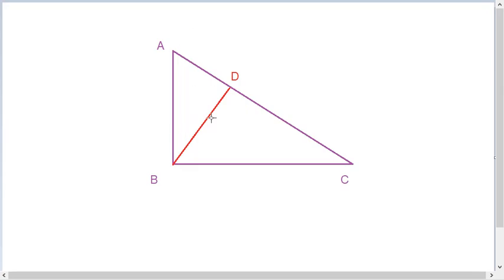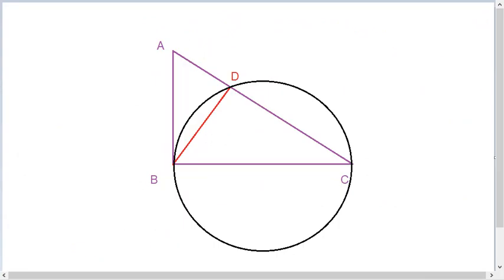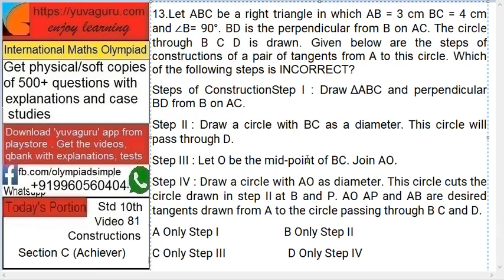Step number 1: Draw ABC triangle with a right angle at B and perpendicular BD from B to AC. So that is the first step. See, this is the first step. ABC triangle, then perpendicular BD to AC.